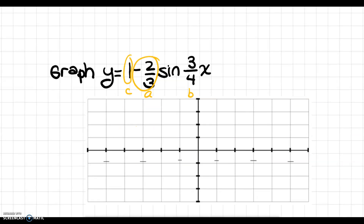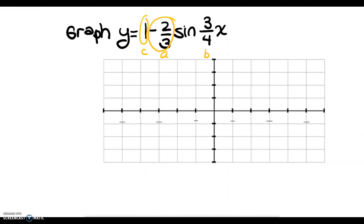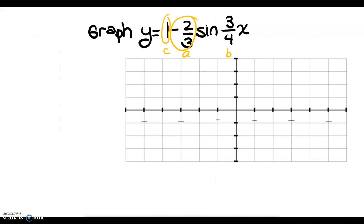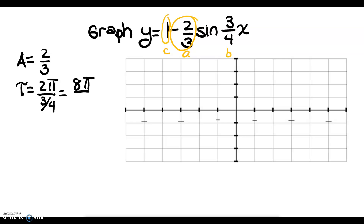One more example. I have A, C, and B circled. I have no D this time — no phase shift — which makes graphing a little bit easier. My amplitude is negative 2 thirds, so its absolute value is 2 thirds. My period is going to be 2 pi over B, and B in this case is 3 fourths, so I get 8 pi over 3. My vertical shift is positive 1, so we'll move the graph up by 1.